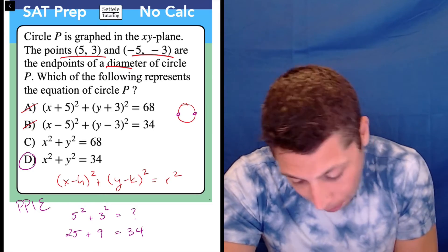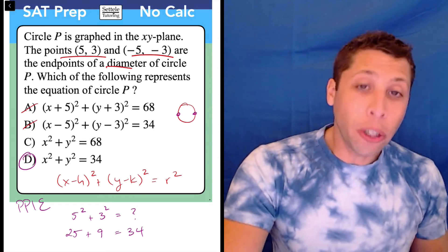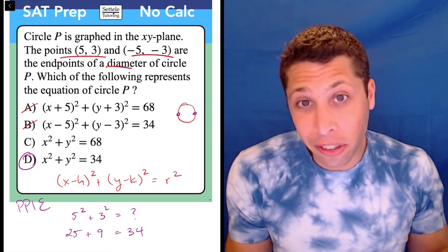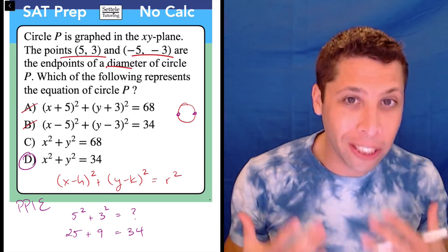That means choice D is the answer, and that's it. We could have done something here where we use the two endpoints to find the radius and then use that in the circle, but honestly, this is just easier. Plug points into equations is a really great strategy.